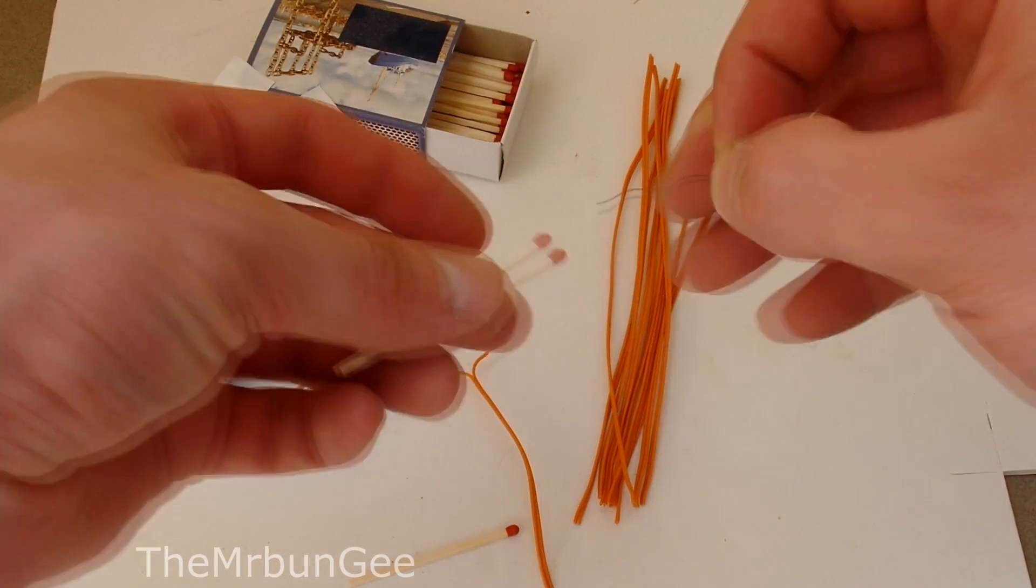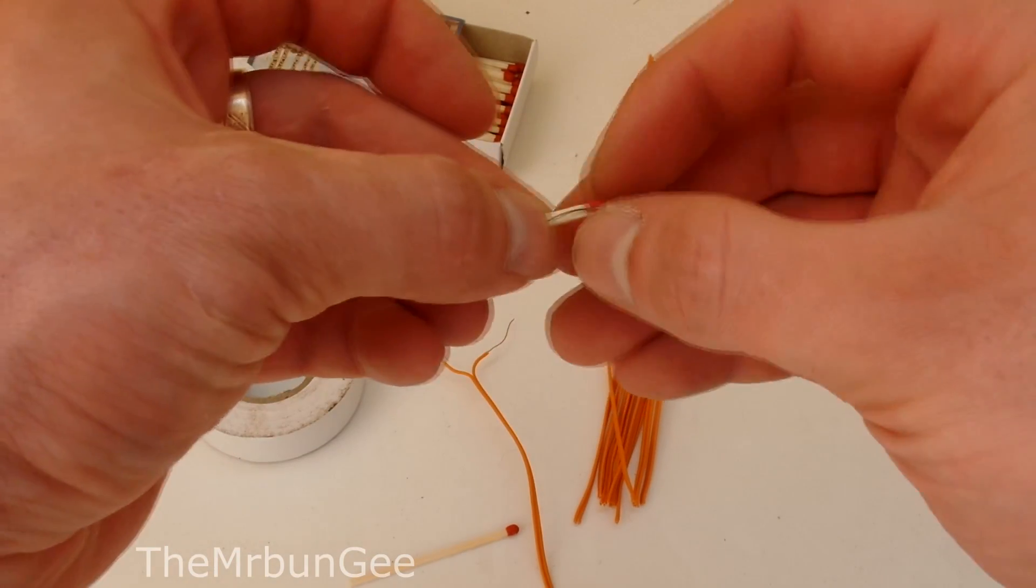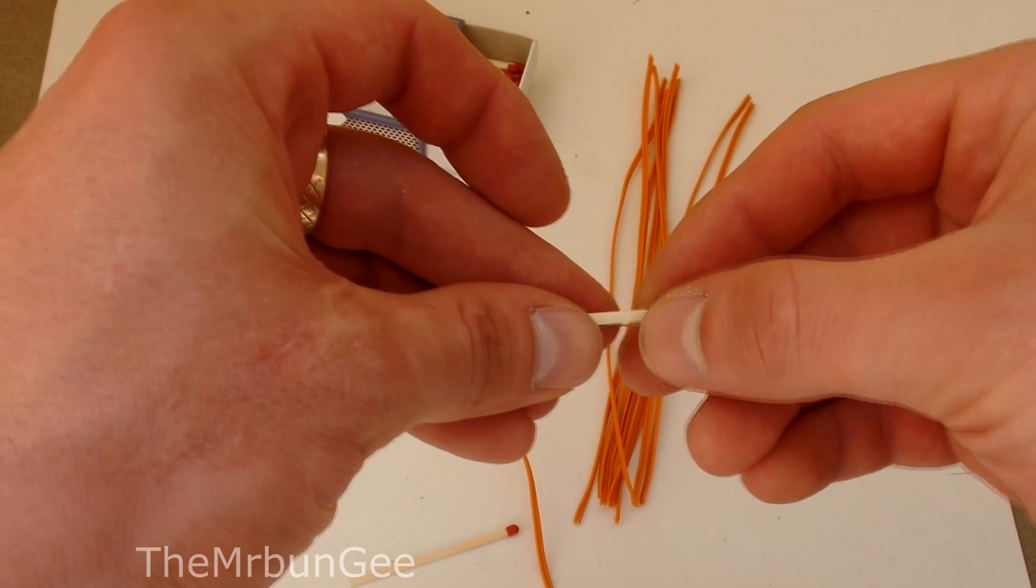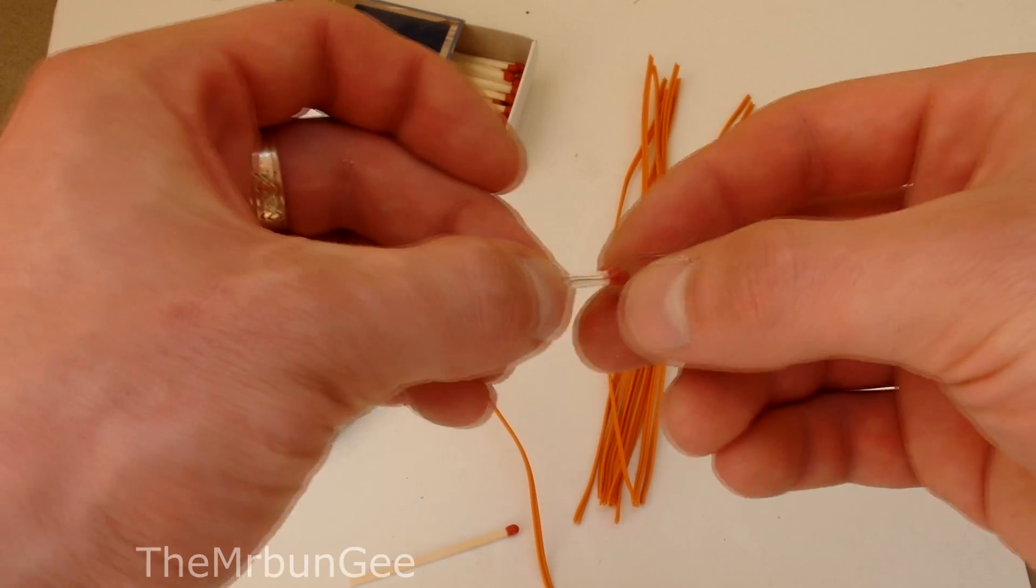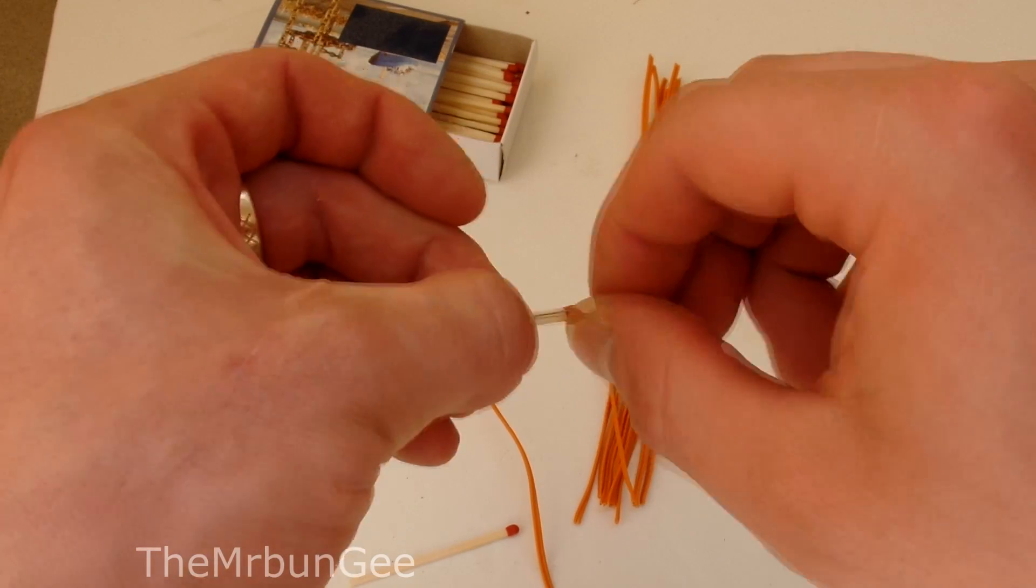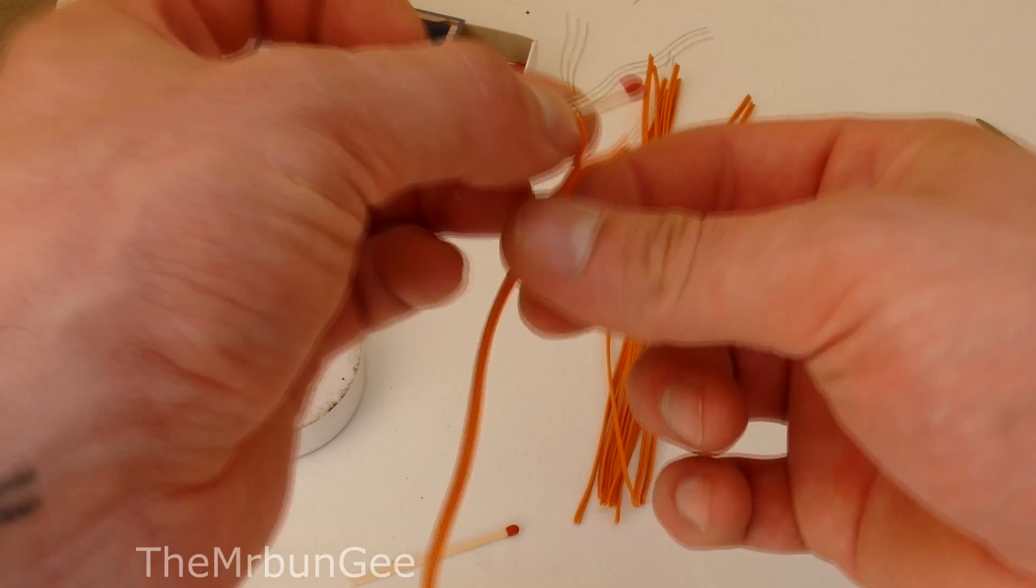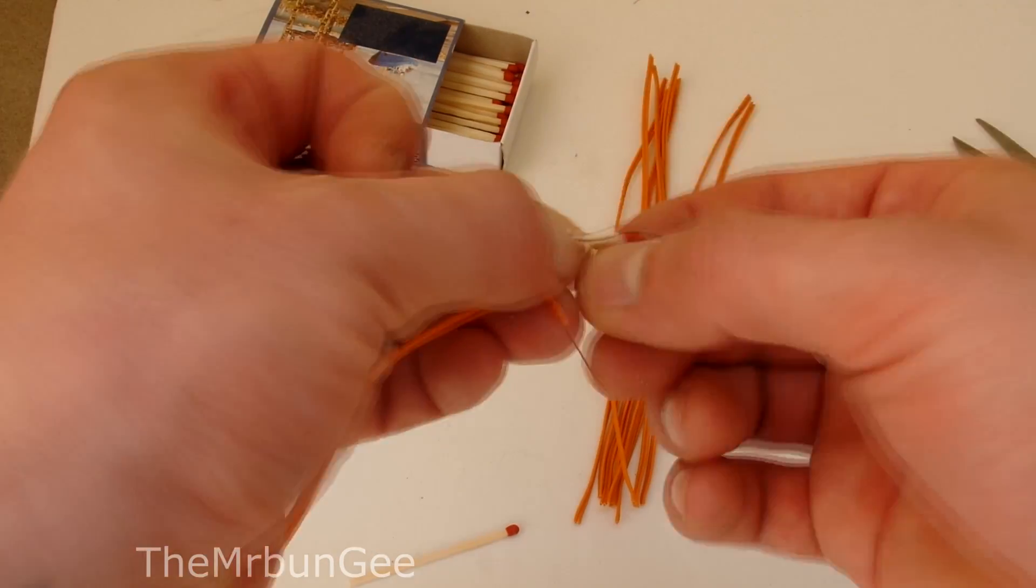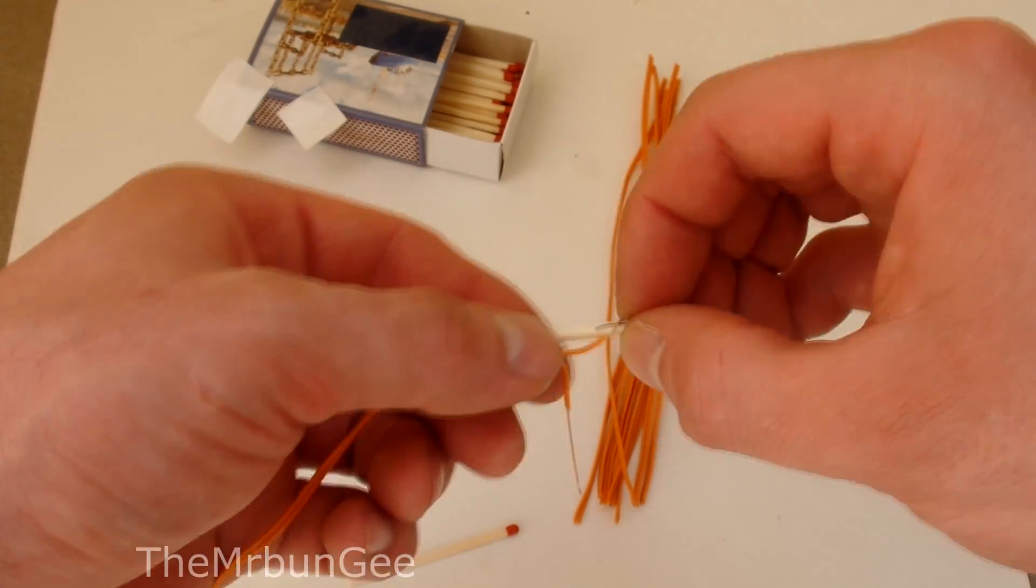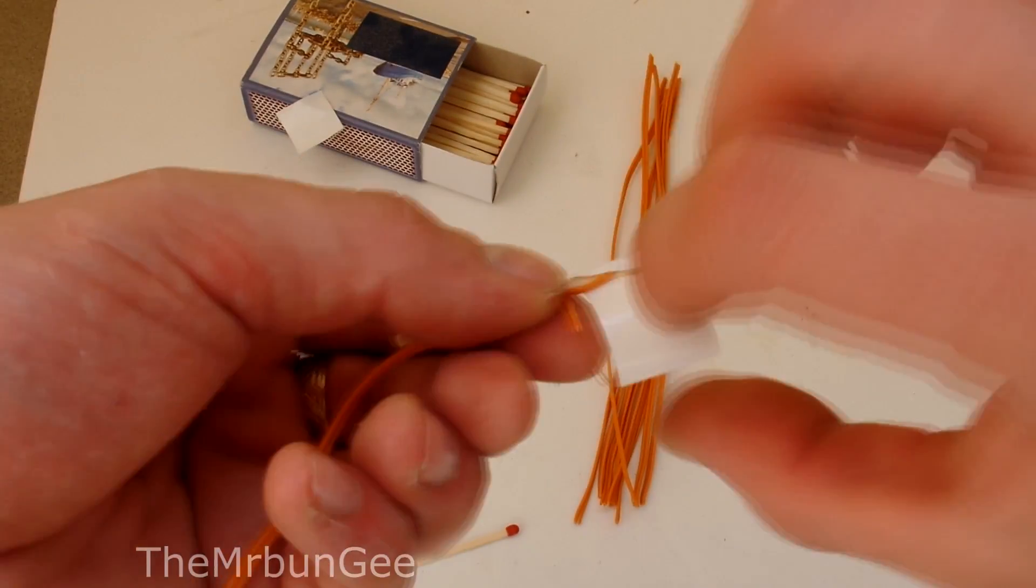Take one match and hold the nichrome wire next to the match head like this. Tie it with one of the stripped wires and cover with tape, so nothing comes out.